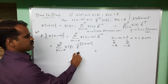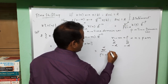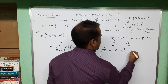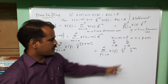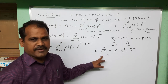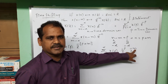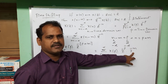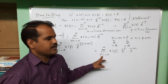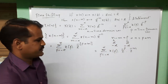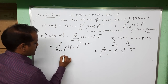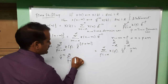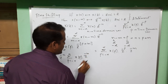We can further simplify: the sum from p equals minus infinity to plus infinity of x(p) times z^(-(p+m)), which can be separated as z^(-p) times z^(-m). Since m is a constant — a shifting constant — z^(-m) is constant with respect to p. Therefore, we can take z^(-m) outside of the summation, rewriting the expression as z^(-m) times the sum from minus infinity to plus infinity of x(p) z^(-p).